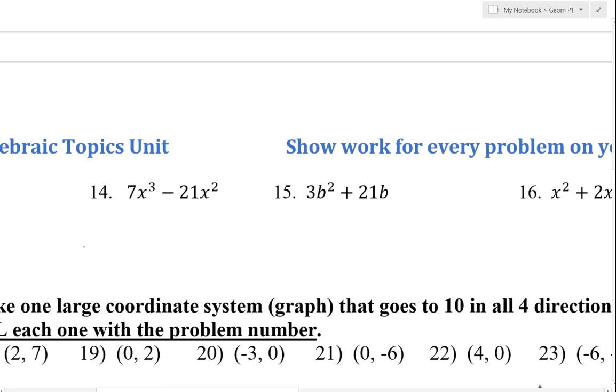Here, it looks like we can take out a 7 and an x squared. So divide by 7x squared. That cancels, you're left with just 1x. 21 divided by 7 is 3, and those x's cancel.